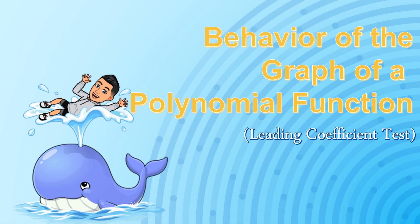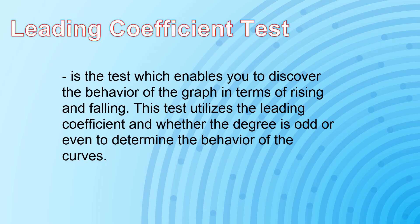Today, we will be learning about determining the end behavior of the graph of a polynomial function using the leading coefficient test. The leading coefficient test is the test which enables you to discover the behavior of the graph in terms of rising and falling. This utilizes the leading coefficient and whether the degree is odd or even to determine the behavior of the curves.